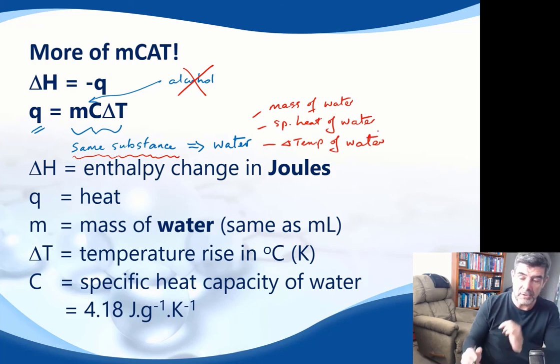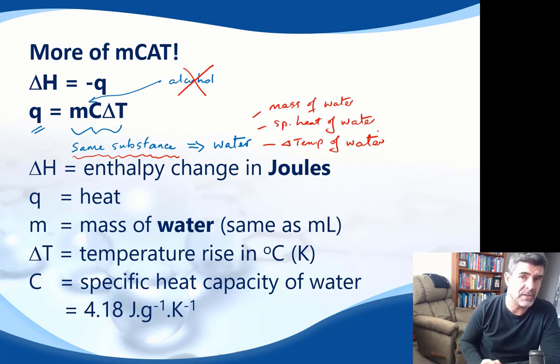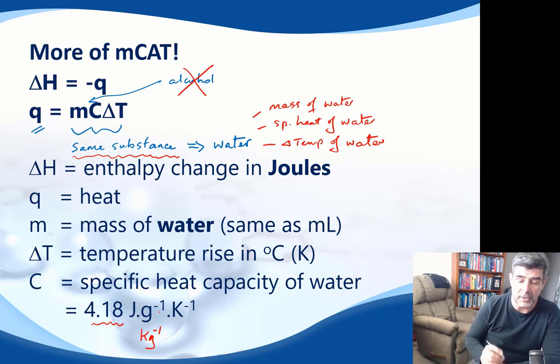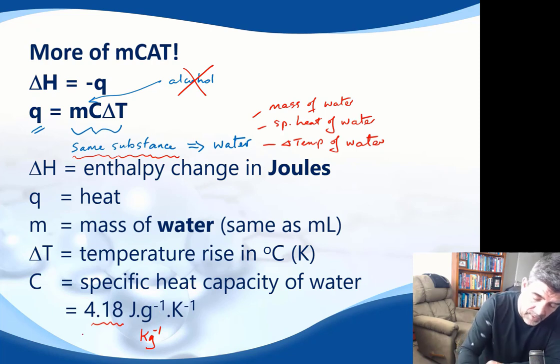That is why you need to make sure that you separate two stages of calculations here. The other thing that I've just changed slightly is that on most of the data sheets, you'll actually find that the value for the specific heat of water is actually given in kilograms rather than in grams, so joules per kilogram per kelvin.